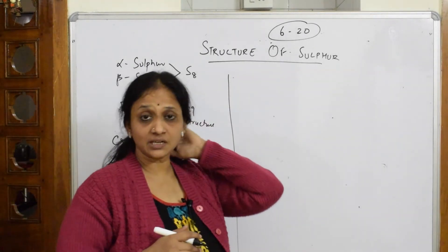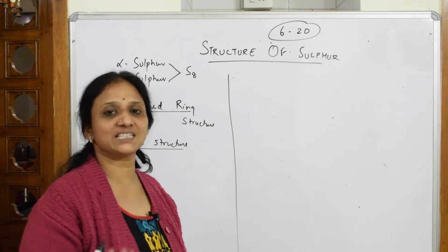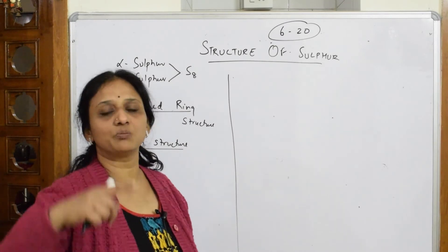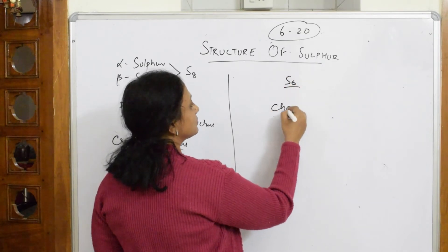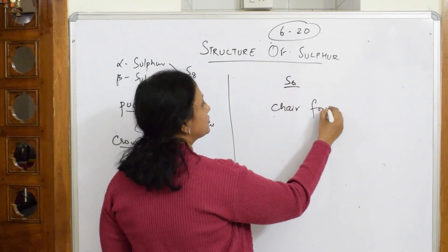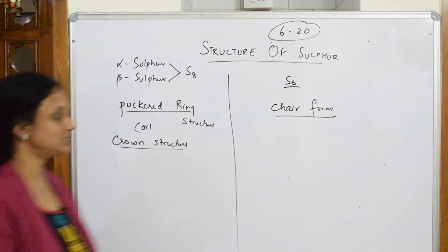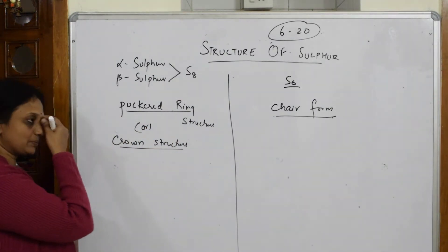When it's existing in the form of S6 molecule, that cyclocompound, we are going to get a chair form. When we are writing S6, we will draw the chair form of sulfur.